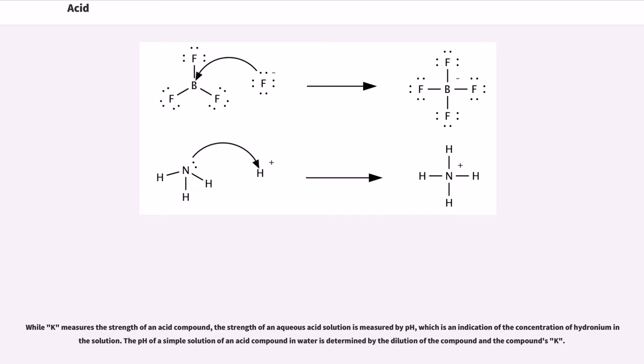While Ka measures the strength of an acid compound, the strength of an aqueous acid solution is measured by pH, which is an indication of the concentration of hydronium in solution. The pH of a simple solution of an acid compound in water is determined by the dilution of the compound and the compound's Ka.